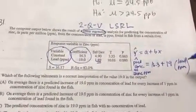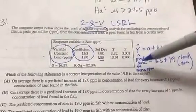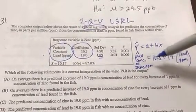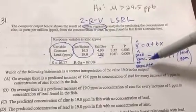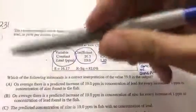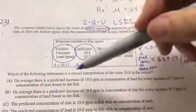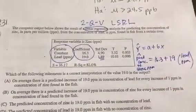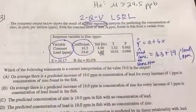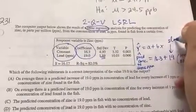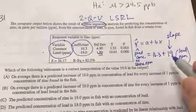So if I know the lead in parts per million, then I can predict. I just have to multiply by 19 and then add by 16.3 in order to predict the concentration of zinc. So let's see what they're asking of me. It says, which of the following statements is correct when we're talking about this value? So I think that they want us to figure out that, oh, that's my slope.